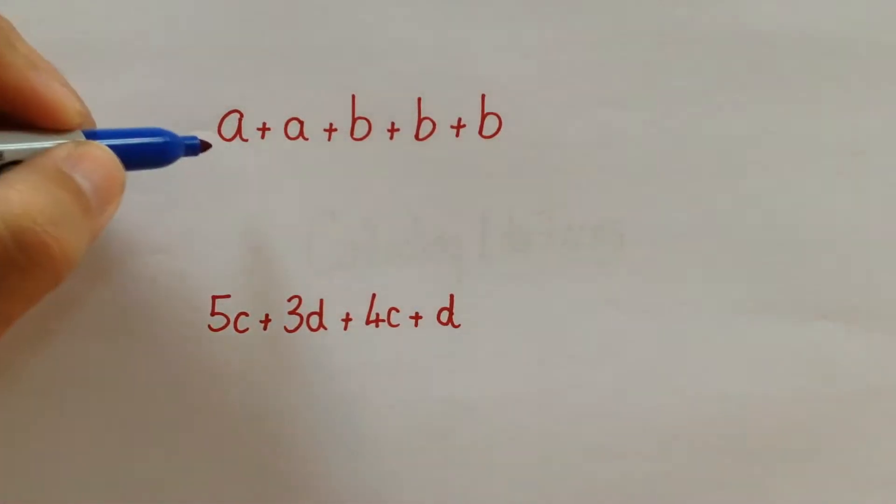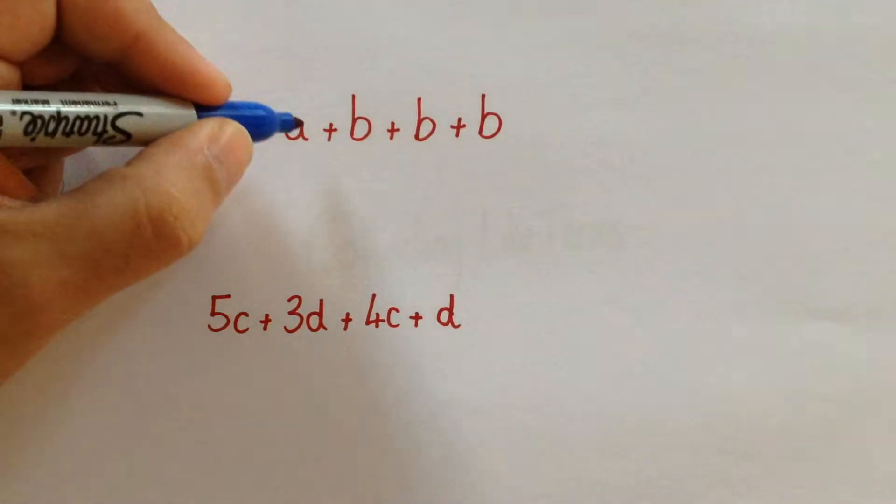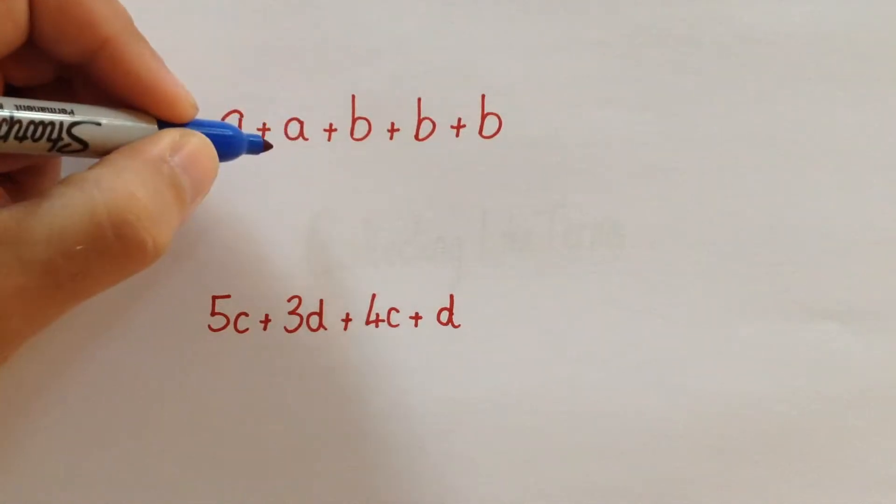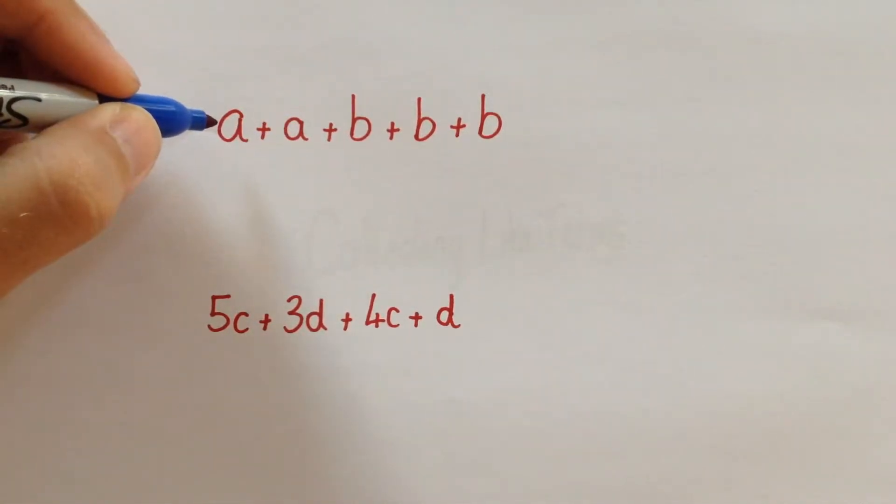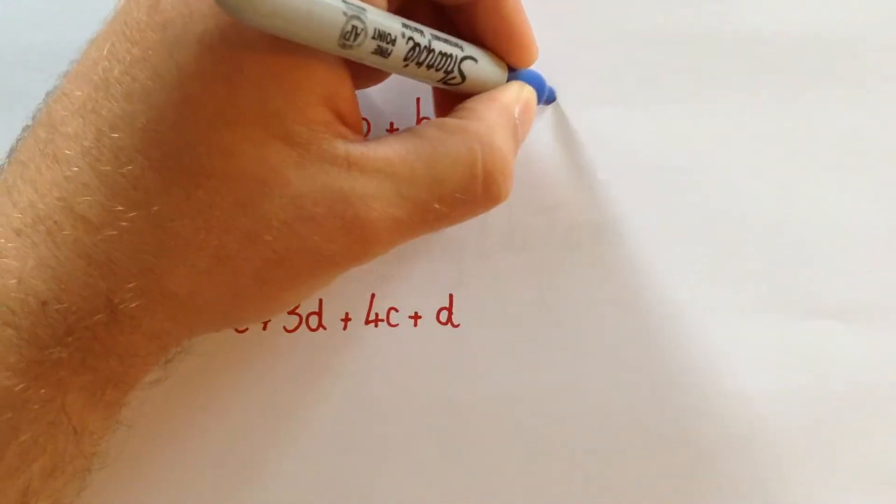So here we've got terms including A's and B's. We can only collect similar terms together. So for this first example, we've got A plus A. We can write that as 2A.